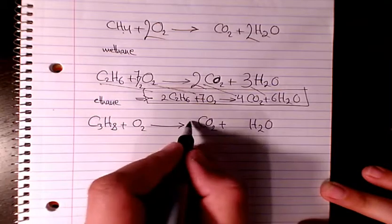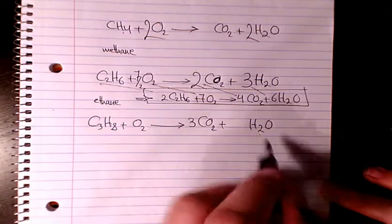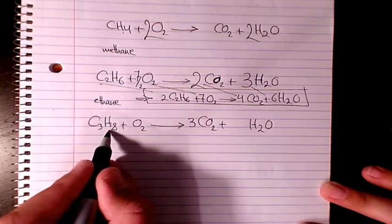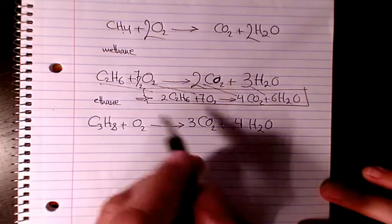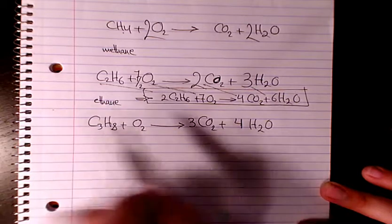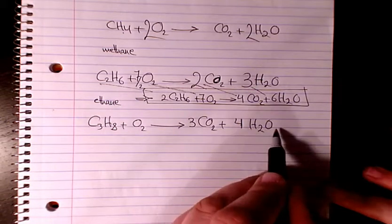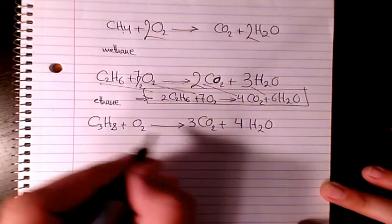So we have three carbon atoms, so we must have three in here as well. And hydrogen is going to be eight here, so we must have four in this side. So we have eight and eight, three and three. What about oxygen? Oxygen, four times one, four; three times two, six. So it's going to be ten, ten divided by two, five.